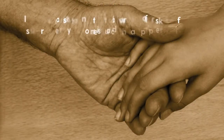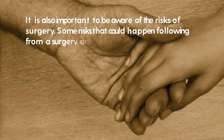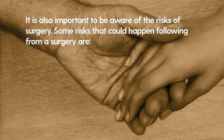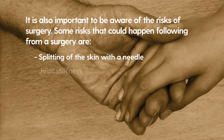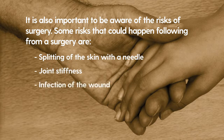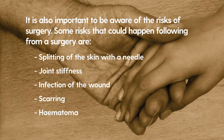Surgery risks. It is important to be aware of the risks of surgery. Some risks following surgery for Dupuytren's include splitting of the skin with a needle, joint stiffness, infection of the wound, scarring, and haematoma — which is blood-filled swelling whilst the wound is healing. It is important that you discuss the risks of surgical treatments for Dupuytren's with your GP or your surgeon.